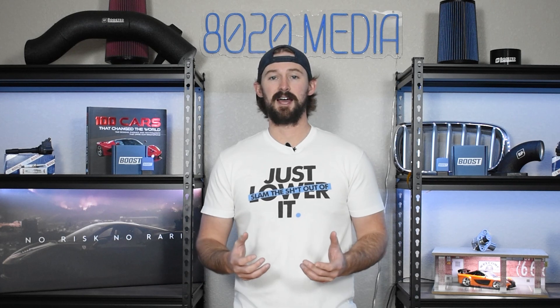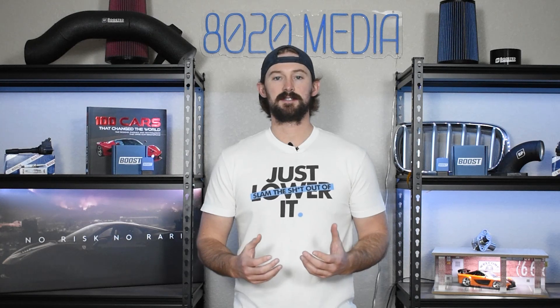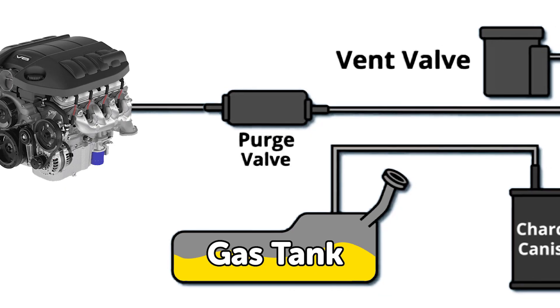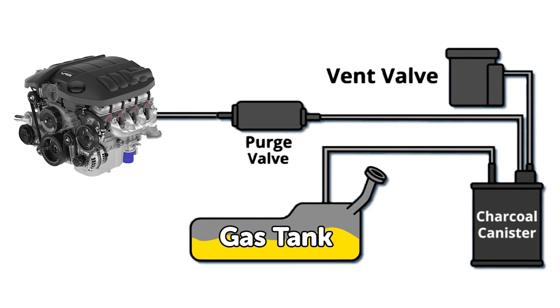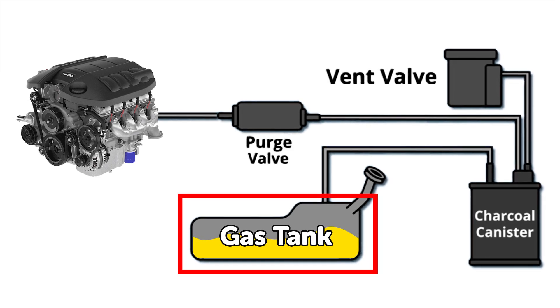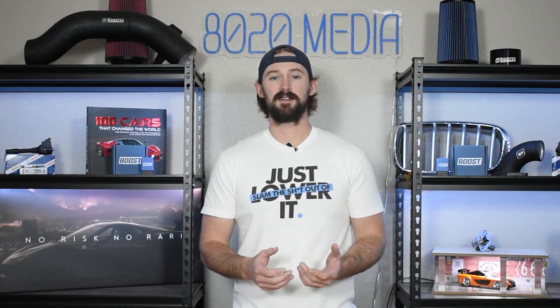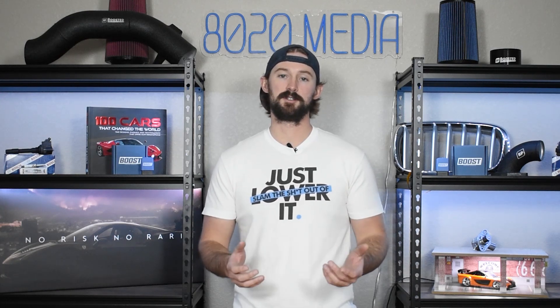Let's first talk about what the EVAP or evaporative emission system is and walk through the different components. The EVAP system is an emission system whose whole purpose is to capture fuel vapors from your fuel tank and recirculate those vapors into the engine so they can be burned off in the combustion process, because we don't want to vent fuel vapors into the atmosphere as they are harmful from an emissions standpoint.